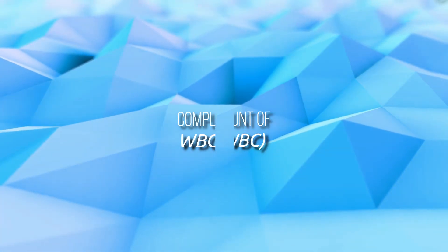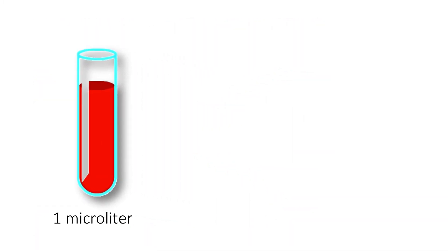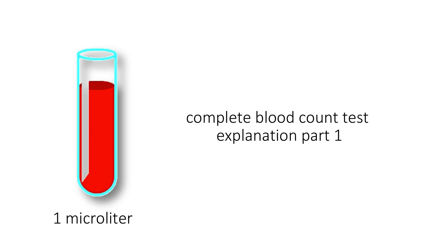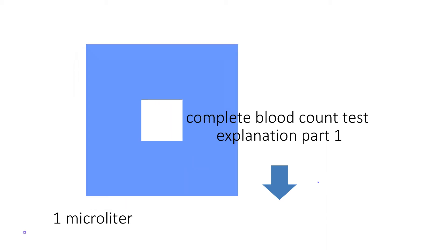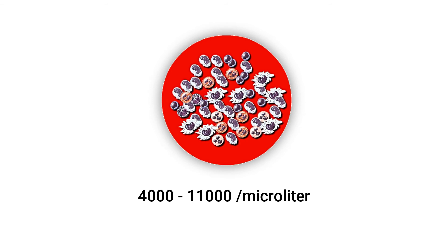So without any further ado, let's get started. The complete count of a particular blood cell in the body means how many of that cell are present in 1 microliter of blood. If you do not know what a microliter is, please watch the first video of this series — the link will be in the description below. The normal range of total count of WBC per microliter is 4,000 to 11,000, meaning each microliter of normal human blood contains approximately 4,000 to 11,000 white blood cells. This is called the total count of WBC.